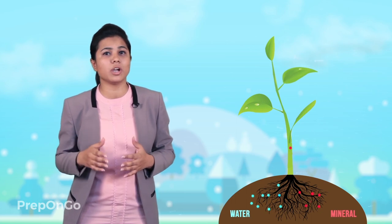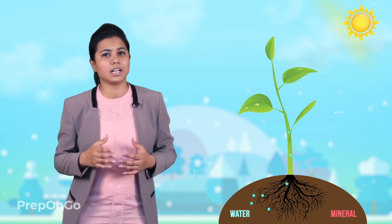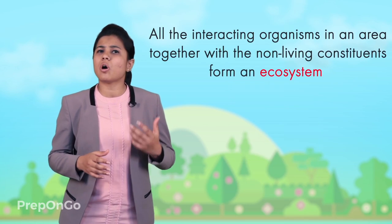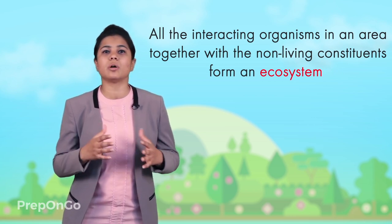Since the beginning of life, various living organisms interact among themselves as well as with the surrounding environment like soil, air, and water. For example, plants interact with soil to get various nutrients. They also use water, sunlight, and carbon dioxide from the air to produce food. Different animals interact with air to get oxygen. They obtain their food either from the plants or by consuming other animals. All these interacting organisms in an area together with the non-living constituents form an ecosystem.